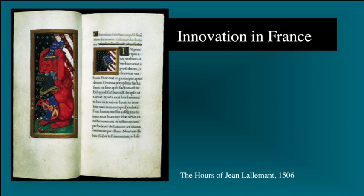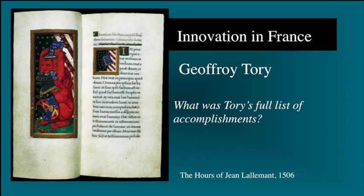Two brilliant graphic designers at the time were Geoffrey Tory and Claude Garamond. The skill and spirit they embodied helped to define the term Renaissance man — a person who makes a unique contribution to more than one field, such as philosophy, literacy, art, or science. Tory's accomplishments are truly staggering. Among his significant contributions, he played a major role in importing the Italian influence and then developing a unique French Renaissance book of design and illustration. Tory loved letterforms. In the Hours of Jean Lallemant, he developed a light Roman with long ascenders and descenders. Some scholars believe that Tory designed early Roman types for Henri Estienne and Simon de Colines, two other printers of the day. Please tell me what was Tory's full list of accomplishments.